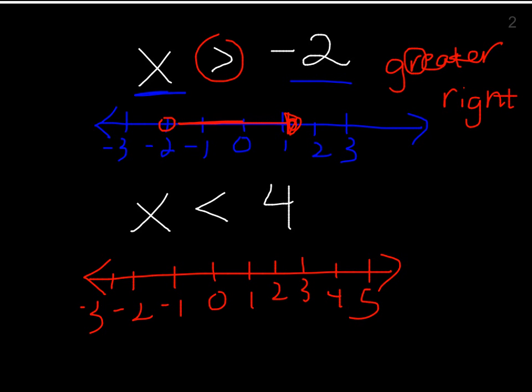This time we're showing less than, so we're not doing or equal to — we'll have an open circle at 4, showing everything less than 4 but not 4 itself. And since we're showing less than, and less than has an L, we go left, because all the numbers less than 4 go in that direction.